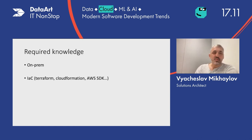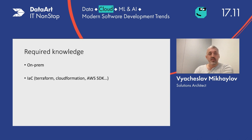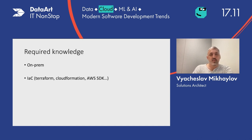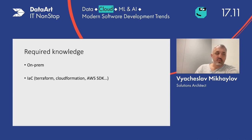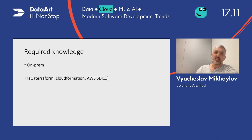Coming back to infrastructure-as-code, it's important to know the basic, well-known tooling — Terraform, CloudFormation, and the Amazon SDK or Azure SDK. These things are very useful for making developers' lives easier.